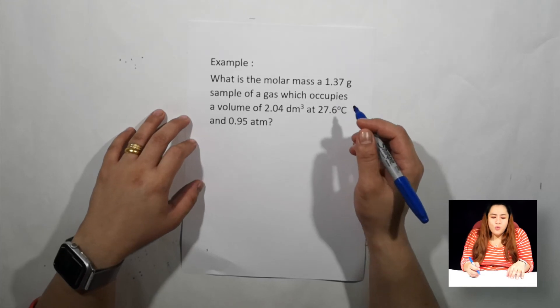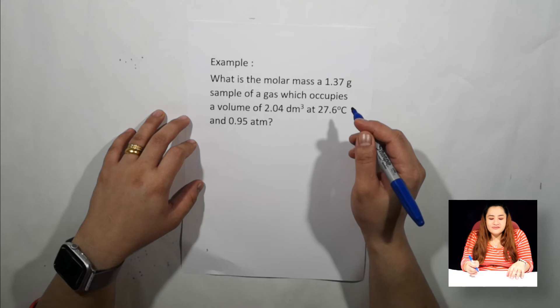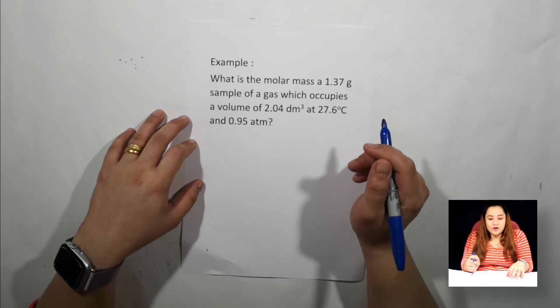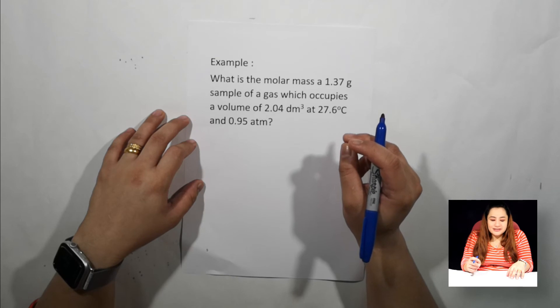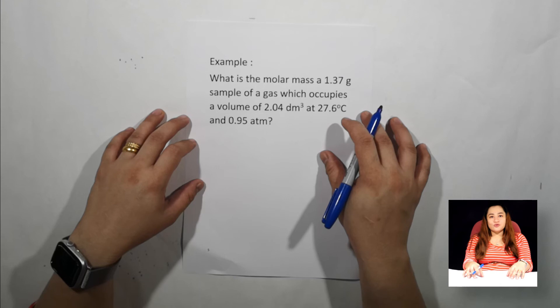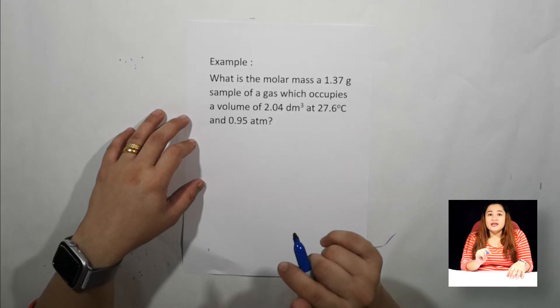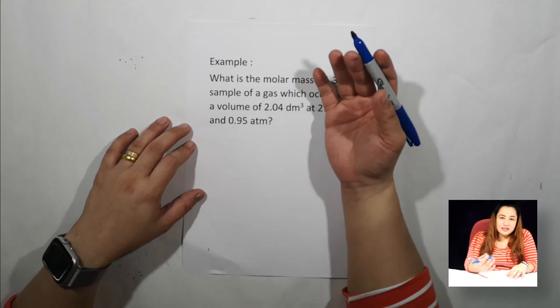Now let us move into the question. What is the molar mass of a 1.37 gram sample of gas which occupies a volume of 2.04 dm³ at 27.6 degrees Celsius and 0.95 atm? So the question needs you to find the molar mass.